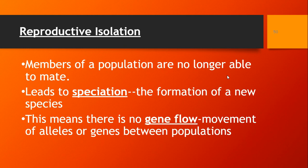This means there is no gene flow — no movement of alleles or genes between populations. If we think about two separate species, like a deer and a pig, they are reproductively isolated. They can't mate together even if they were in the same area. So the genes aren't flowing, there are no alleles mixed, and we're not having some kind of deer-pig hybrid. They're just two different species — speciation.